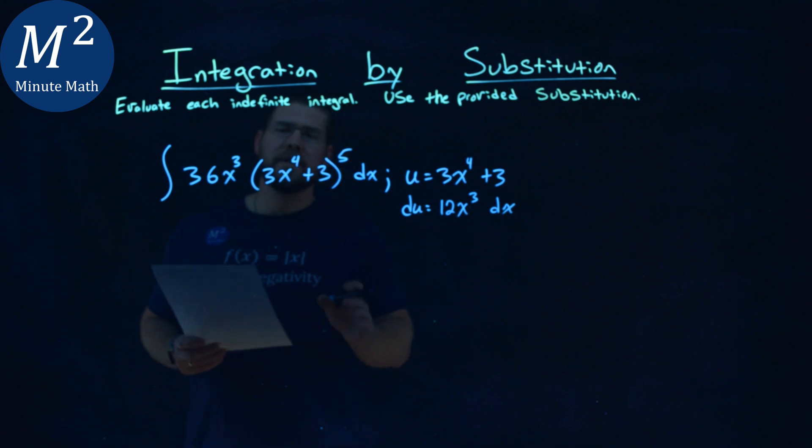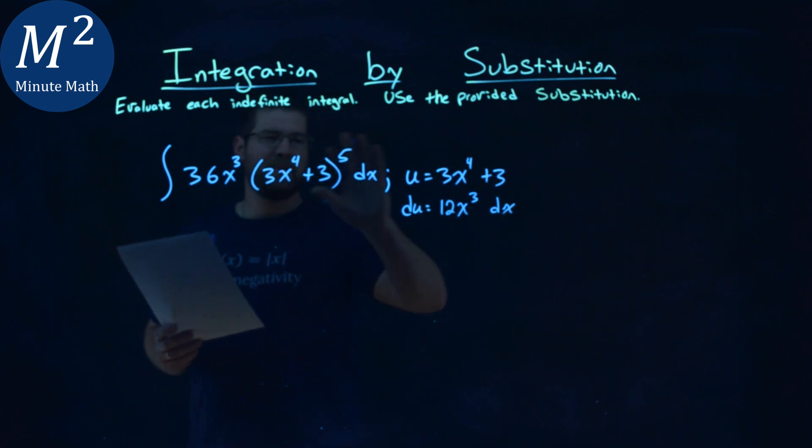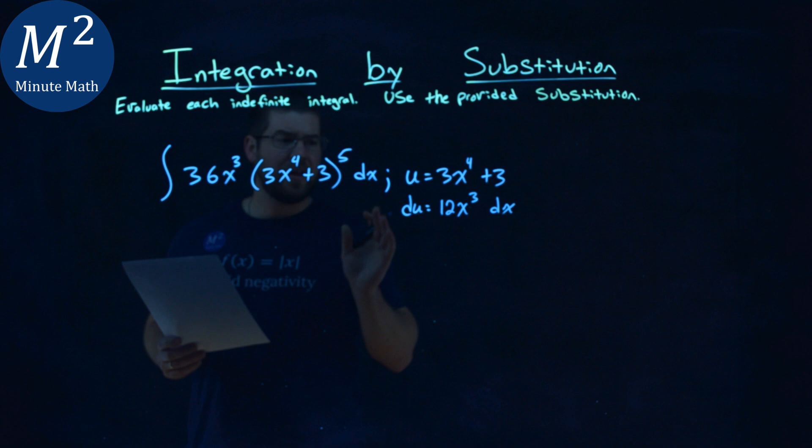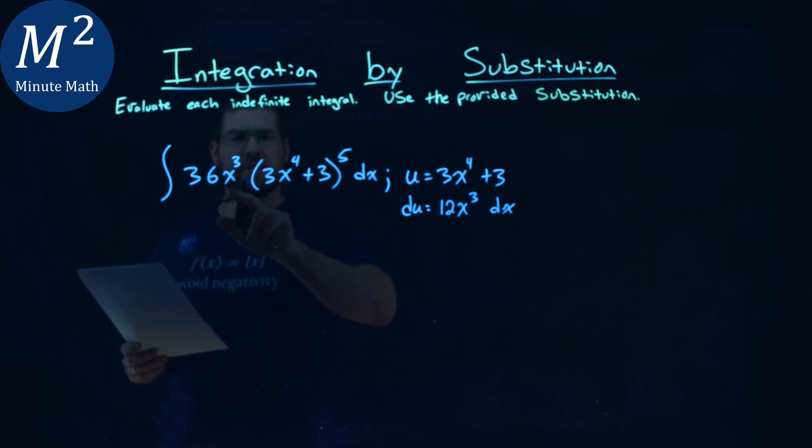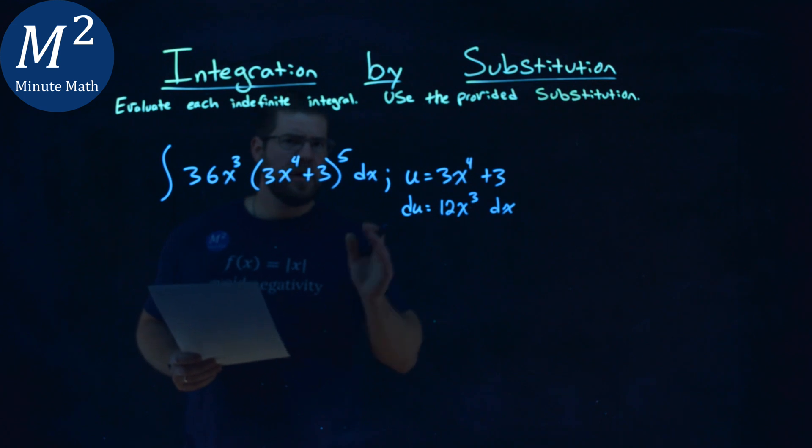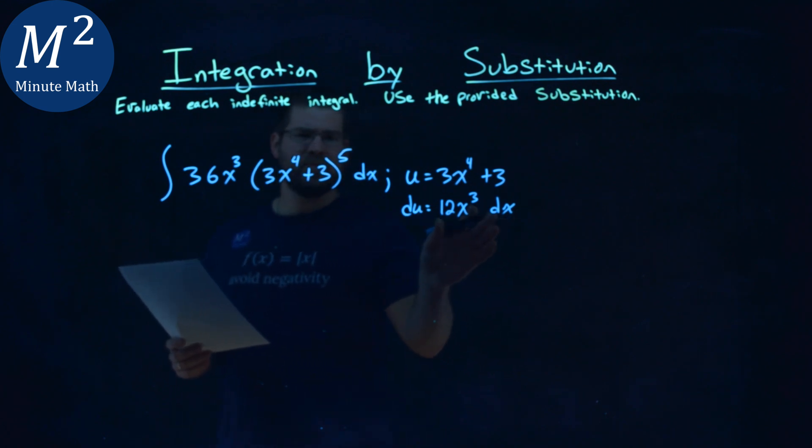So from here, I want to see if I can make this integral combine something with my u and du, and I think I almost have it. We have a 12x to the 3rd dx, and we have a 36x to the 3rd dx. So what can we do to really fix this so it lines up perfectly?